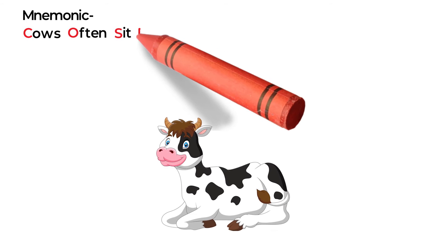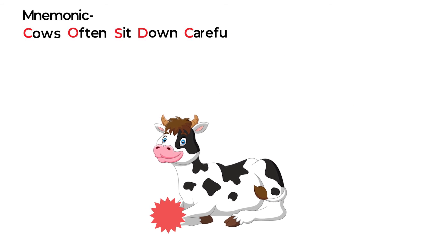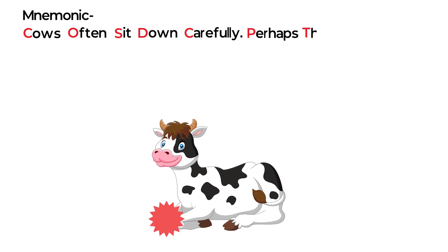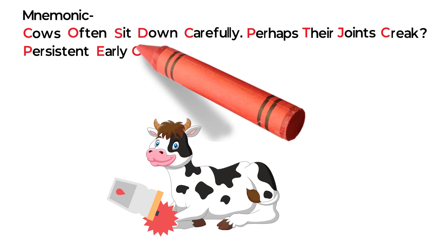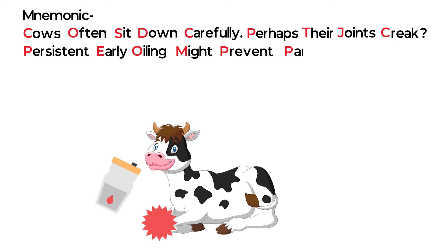Cows often sit down carefully, perhaps their joints creak, persistent early oiling might prevent painful rheumatism.